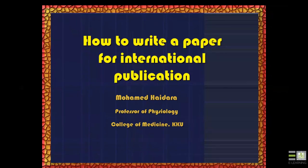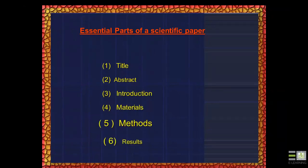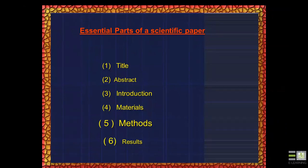We will speak about how to write a paper for international publication. I will give you not only the essential parts of a scientific paper, but also my experience as a board member and reviewer for more than 100–200 international publications. Now I will speak about the essential parts of a scientific paper and list them one by one.